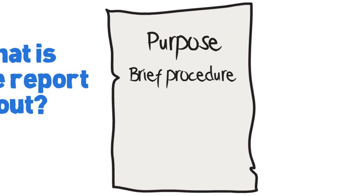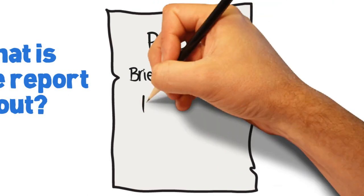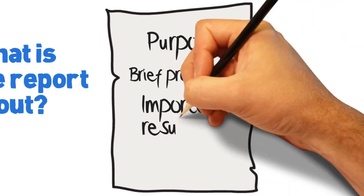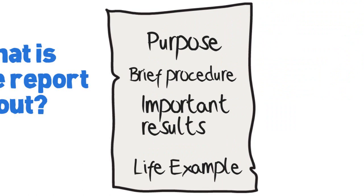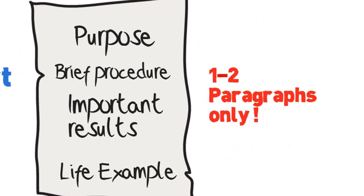Next, it contains a brief procedure of how you performed the experiment. Do not be very detailed as you're going to explain it more in the results section. The most important results should also be included, and the significance of the experiment by giving a real-life application. Keep in mind your abstract should be one to two paragraphs only.